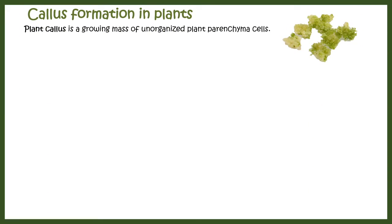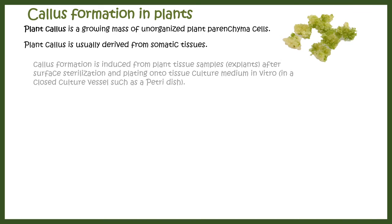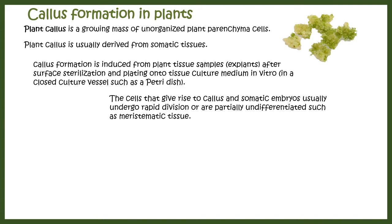Callus culture: callus formation in plants can be induced in several ways. Callus simply means a growing mass that is unorganized and undifferentiated, basically parenchyma cells. Plant callus can be derived from somatic tissues; callus formation is induced from a plant tissue sample after surface sterilization. Maintaining a sterile environment is essential since callus can be contaminated. Cells that give rise to callus are usually rapidly dividing or partially undifferentiated, such as meristem tissues.